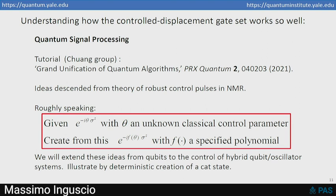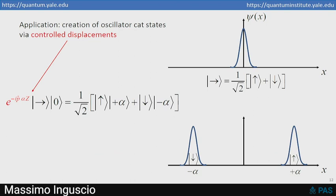e to the minus i f of theta sigma z, where f is some specified polynomial function of the unknown classical control parameter. And this can be used to correct errors in NMR from amplifier gain fluctuations, or in ion traps, it's used to deal with laser amplitude fluctuations. And I want to extend this idea of robust control that's robust against fluctuations in classical control parameters to the control of quantum oscillator qubit systems. And I'm going to illustrate the idea with deterministic creation of a cat state.